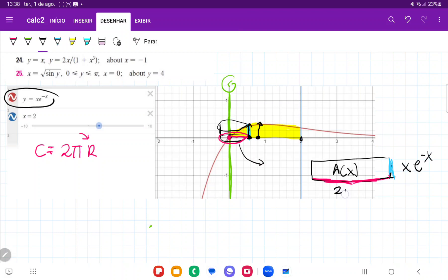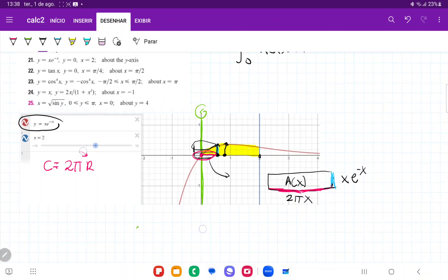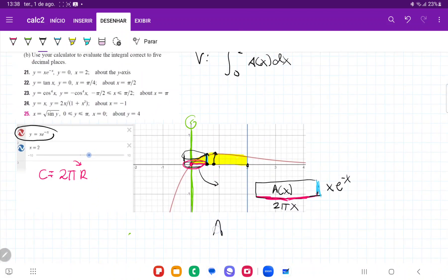Then this base here is 2πx. And we can see here, then, that the area is equal to base times height. So, it's equal to 2πx times xe^(-x). Or 2π times x²e^(-x).